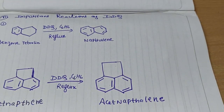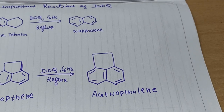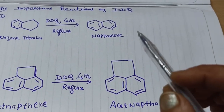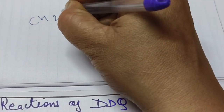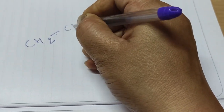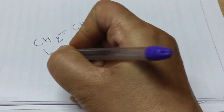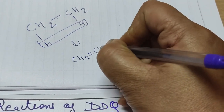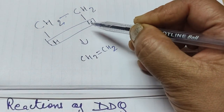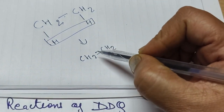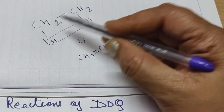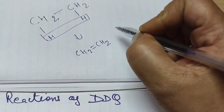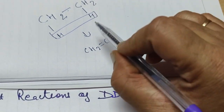Now let's see the applications of DDQ. DDQ is used as a dehydrogenation agent. For example, if we take ethane as CH2-CH3 and remove two hydrogen atoms, we get CH2=CH2. The meaning of dehydrogenation is removal of hydrogen atoms to form a double bond — essentially an elimination reaction. The main function of DDQ is acting as a dehydrogenating agent.